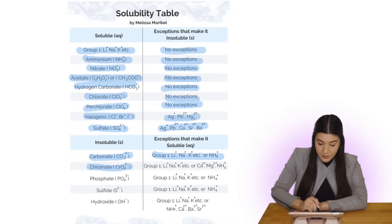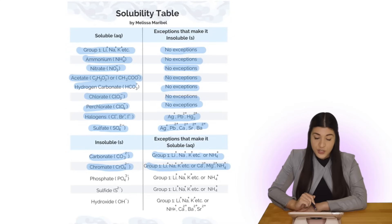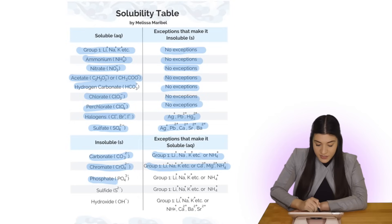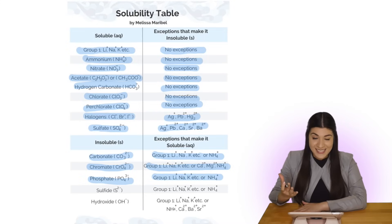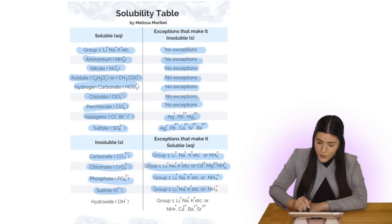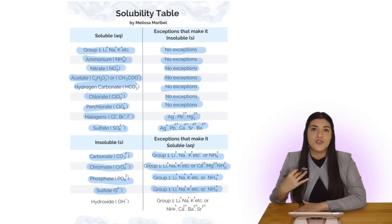Let's look at chromate — same sort of concept. If it's Group 1 metals, calcium, magnesium, or ammonium attached to chromate, then it's aqueous or soluble. Phosphate is a similar concept: whenever Group 1 metals or ammonium are attached to phosphate, it's aqueous. And sulfide — whenever attached to Group 1 metals or ammonium, it's aqueous; otherwise it's typically a solid.